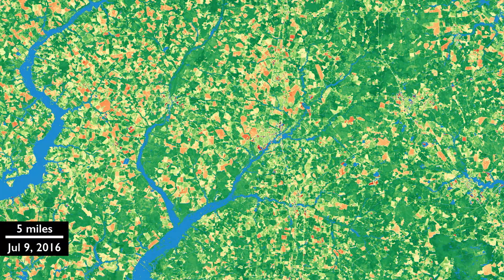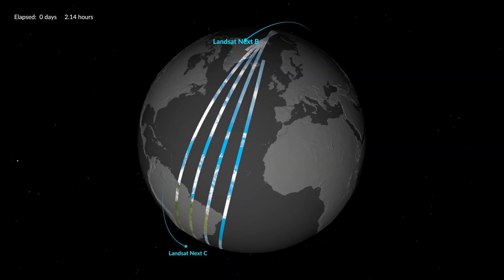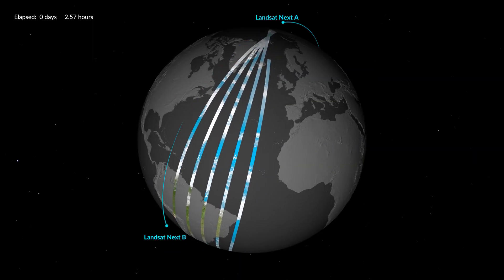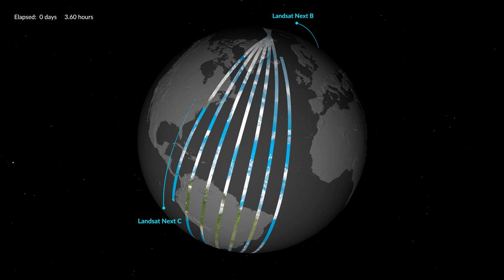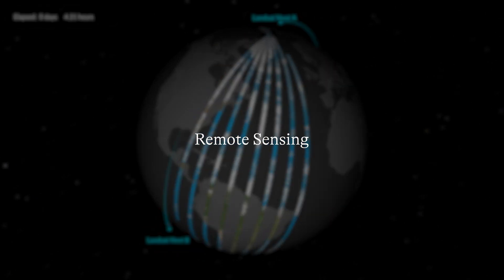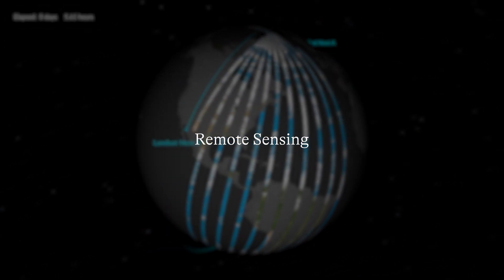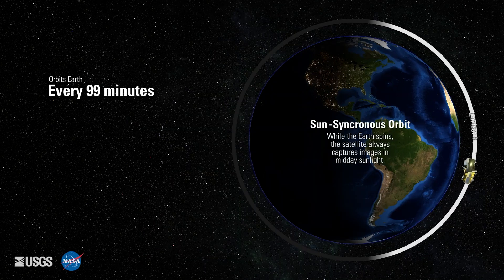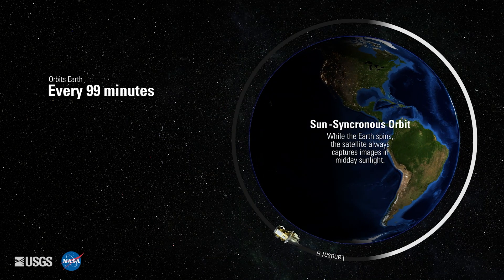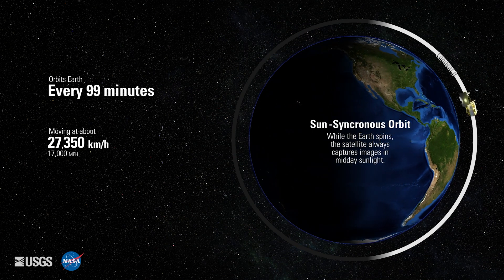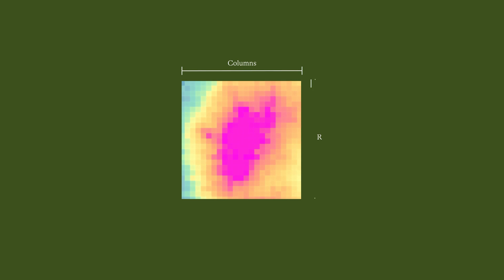To gather raster data from aircraft or satellites, sensors capture information about the Earth's surface — a method known as remote sensing. This allows for various types of raster data, including continuous data like elevation models. Rasters are grids of pixels arranged in rows and columns, representing data like image reflectance, land cover, elevation, or temperature.